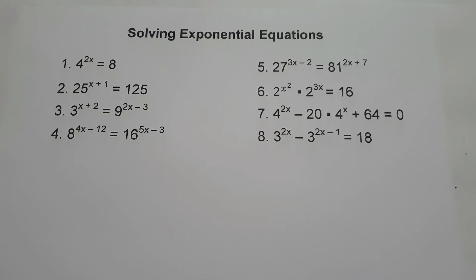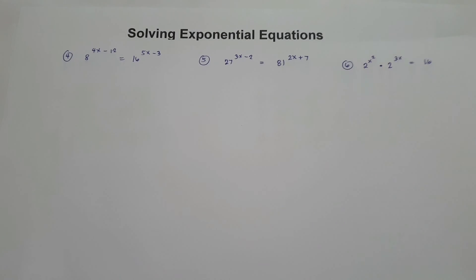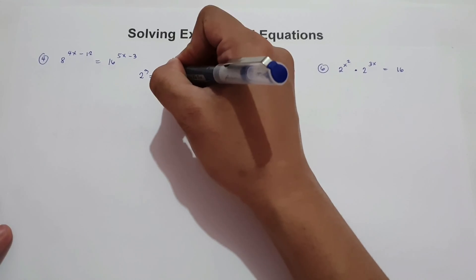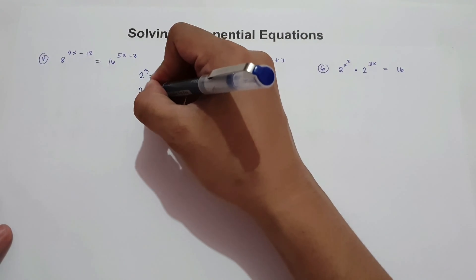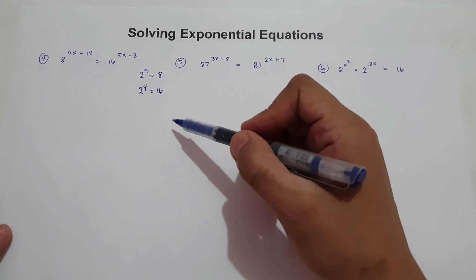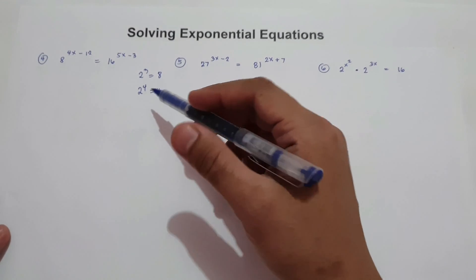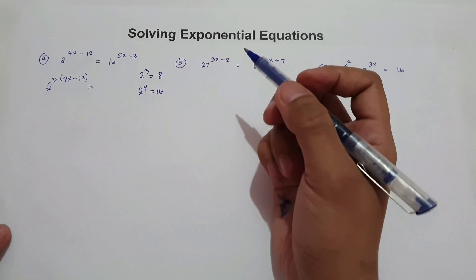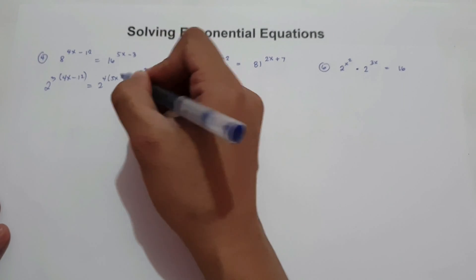For number 4: 8 raised to 4x minus 12 equals 16 raised to 5x minus 3. Let us write 8 and 16 with the same base. 2 raised to 3 is 8, and 2 raised to 4 is 16. So let us change 8 and 16 by 2 raised to 3 and 2 raised to 4. We have 2 raised to 3 times 4x minus 12 equals 2 raised to 4 times 5x minus 3. Then cancel the base.